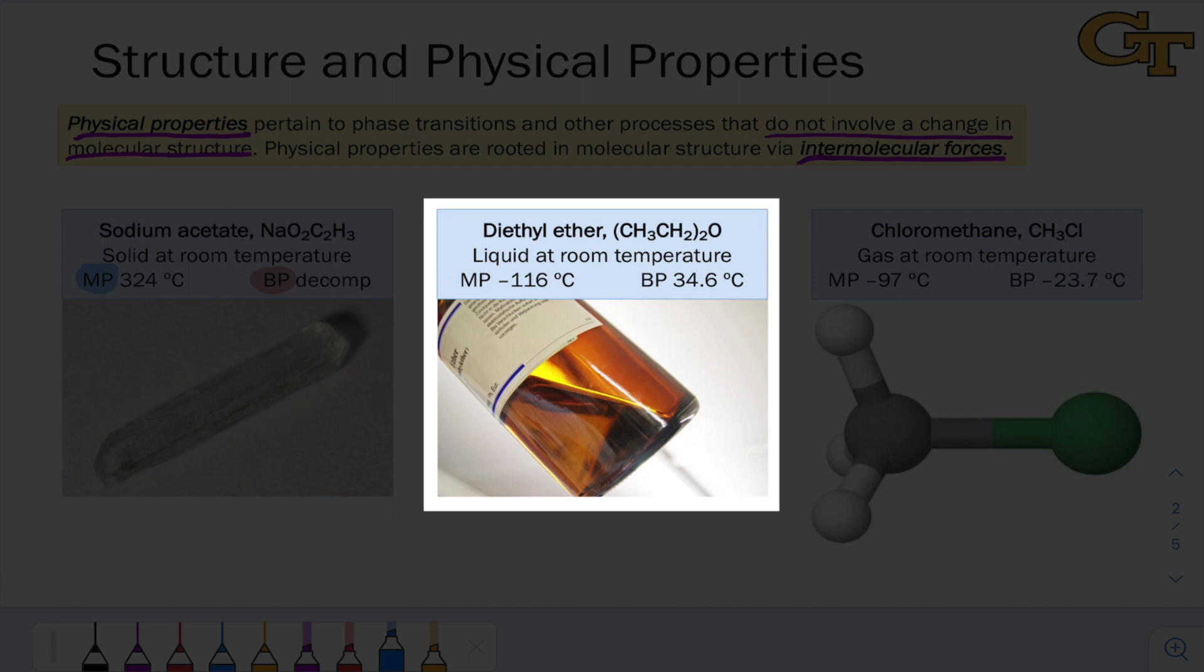Diethyl ether is a liquid at room temperature, with a much lower melting point of negative 116 degrees Celsius, and a boiling point of 34.6 degrees Celsius, so it's kind of barely a liquid at room temperature. It's absolutely volatile. It will evaporate fairly quickly on its own at room temperature, and above the temperature of a reasonably warm day, it's going to boil.